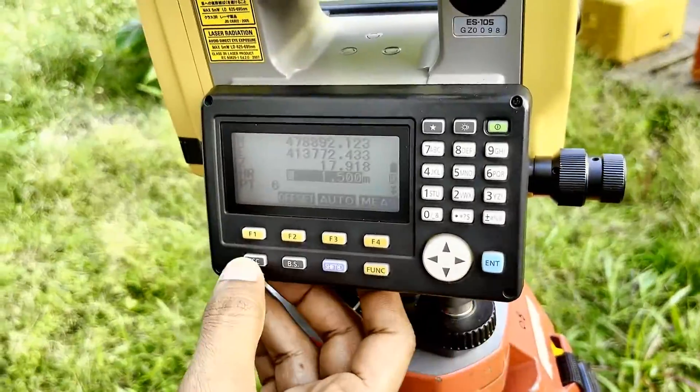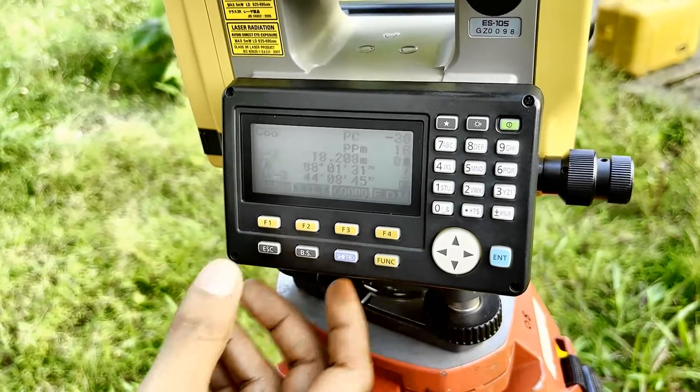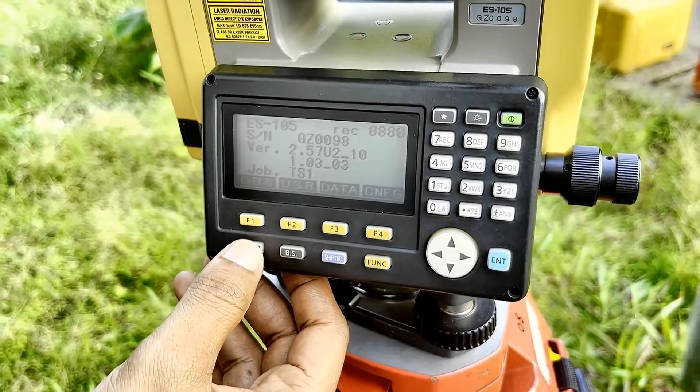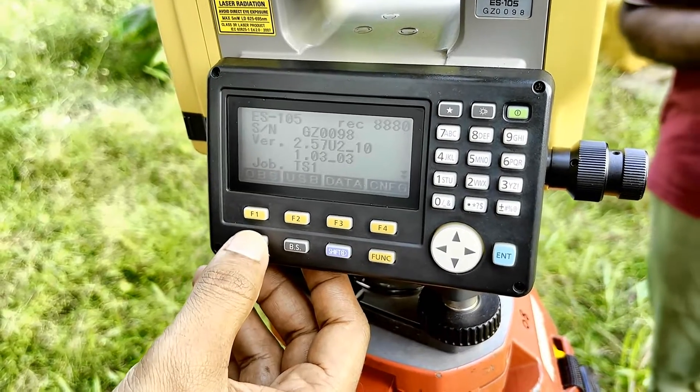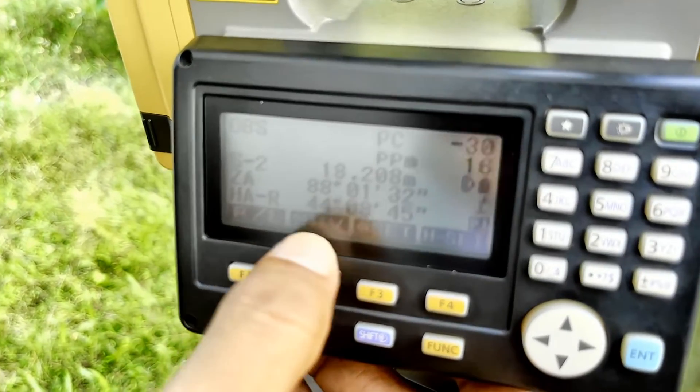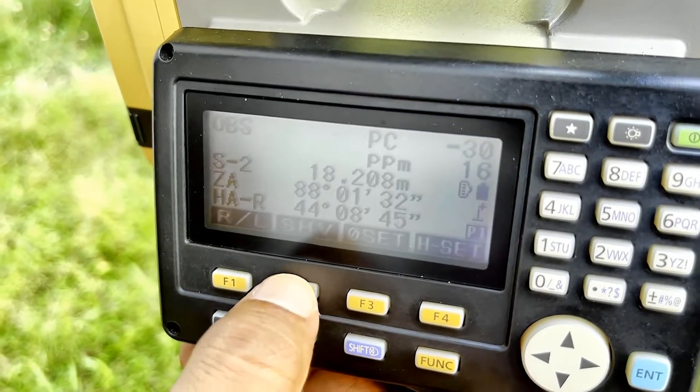So I escape from this page and I am looking for SHV option. Now here, there is a mode called SHV. If we press SHV, now you see it displays SH and V.